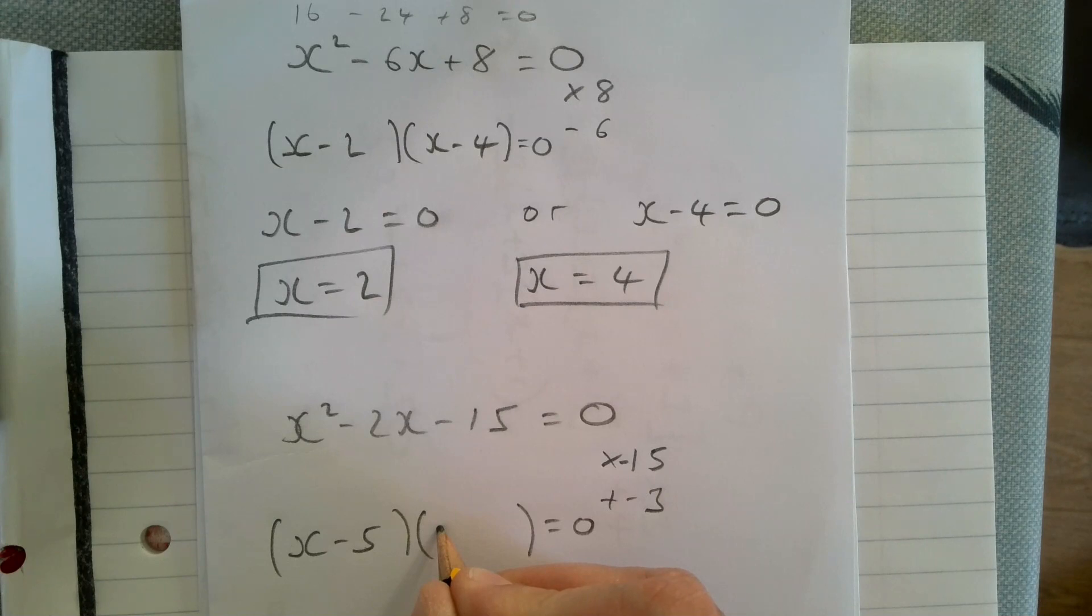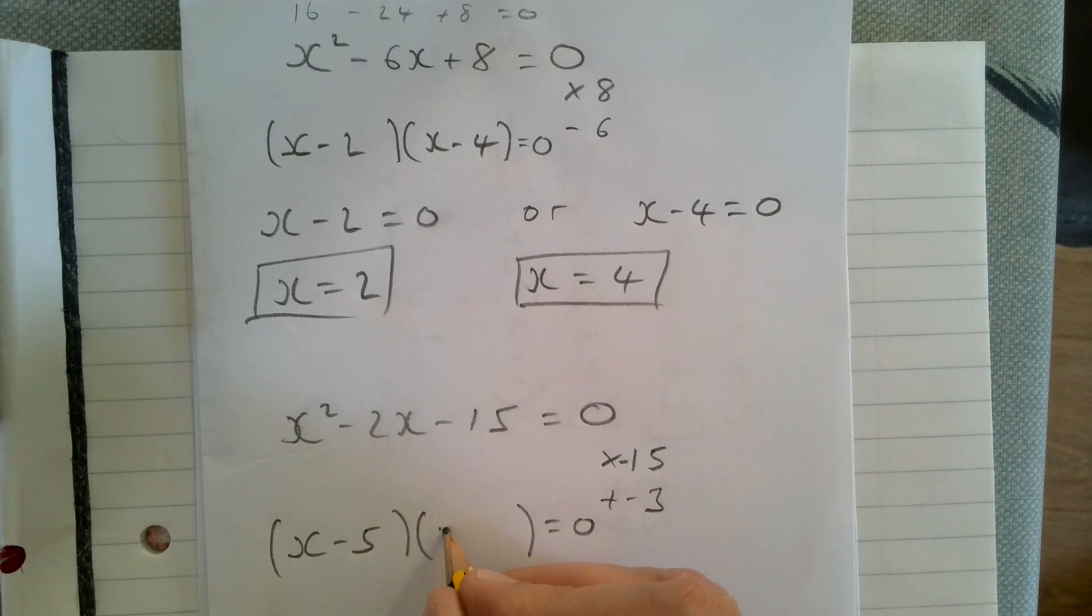We're going to have x minus five—let me see, what am I doing here? I think we got this one wrong. How about x minus five—I'm sorry, yes—x plus three.